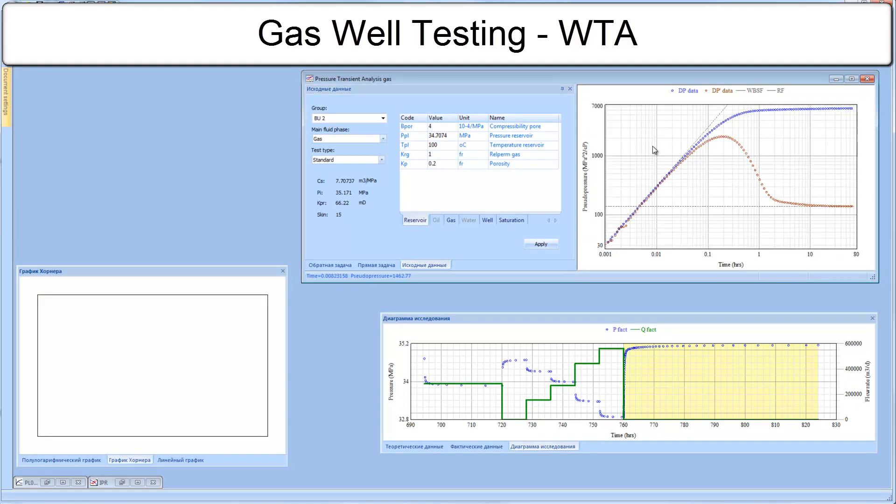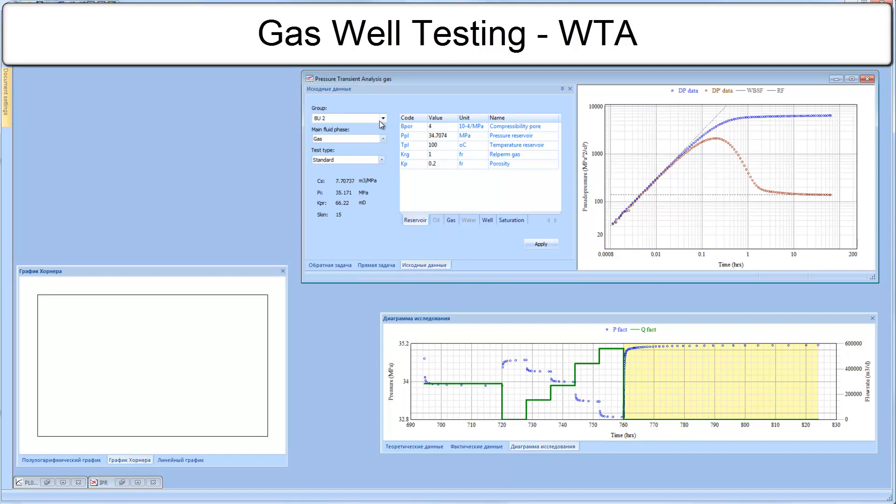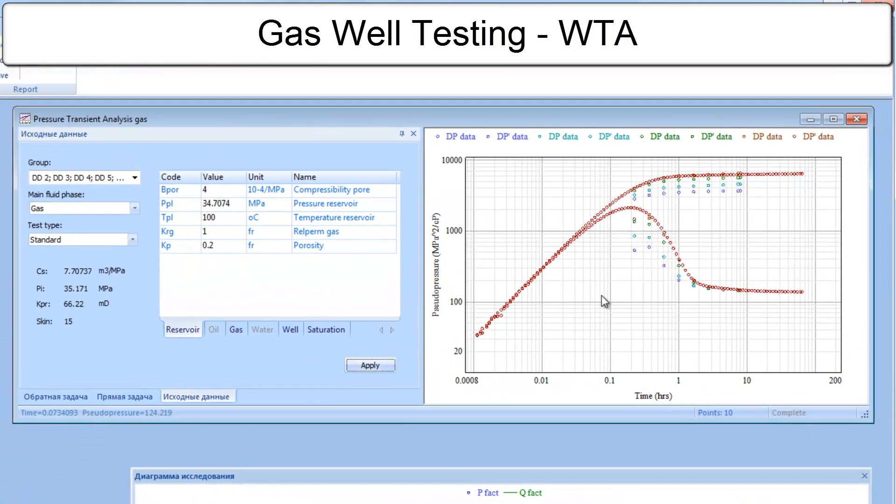We start with analysis of the data on the diagnostic plot, log-log plot. Select all four drawdowns and a final buildup. Overlaps of pressure show that all four drawdowns have less normalized delta P. With the assumption that production rates are correct, we may say that skin has been increasing with the increase of flow rate.